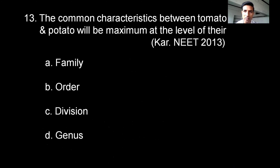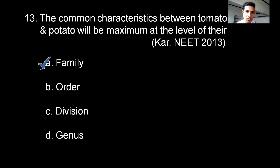The common characteristics between tomato and potato will be maximum at the level of their family, order, division, or genus. The correct option is family — they share the most common characteristics at the family level.